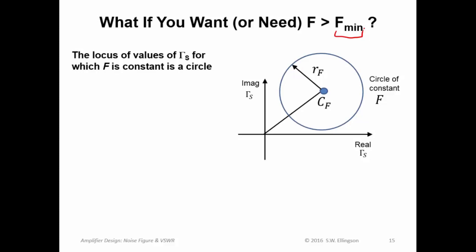So how do you do that in a principled way? Well, first, let me introduce you to this idea. The locus of values of the source reflection coefficient for which the noise figure is a constant turns out to be a circle.